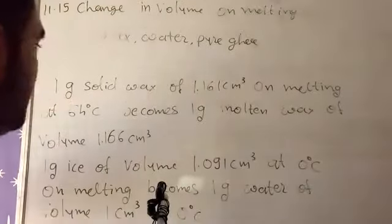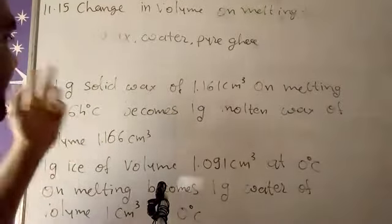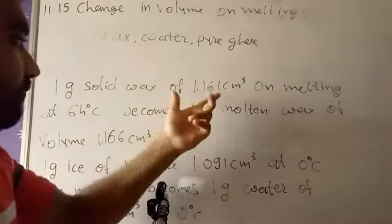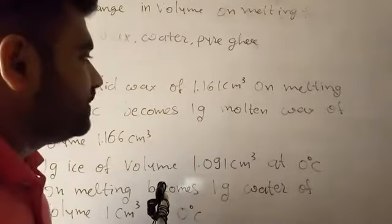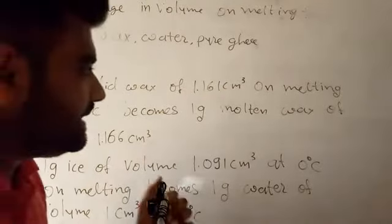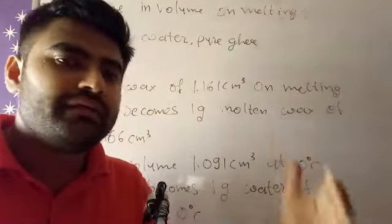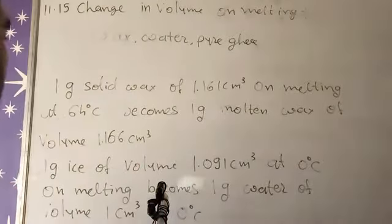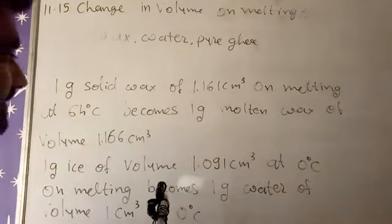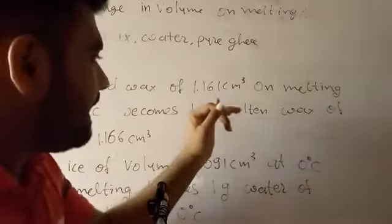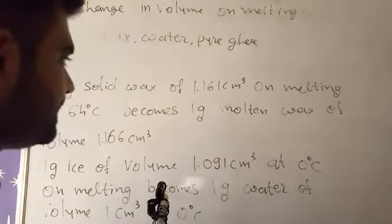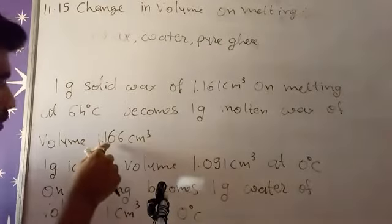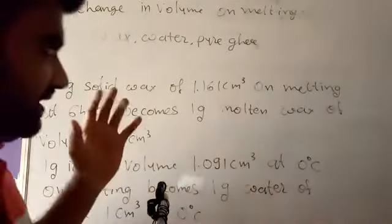So here, for example, if we have 1 gram of solid wax, its volume is 1.161 centimeter cube. On melting, or here we are giving some heat at 64 degree celsius, it becomes 1 gram molten wax. We know that, but now its volume becomes 1.166 centimeter cube.